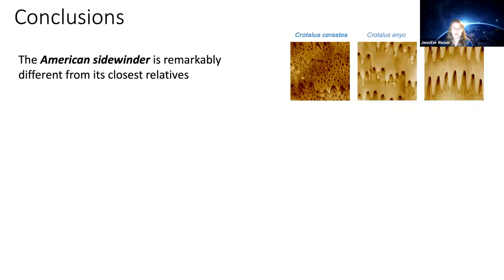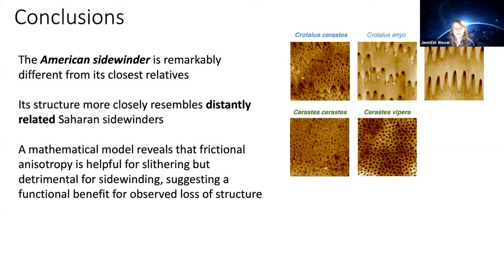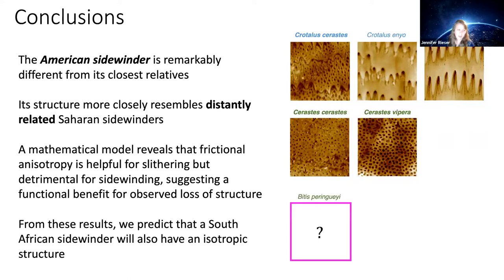To conclude: the American sidewinder has a remarkably different microscopic structure on its belly compared to its closest relatives, and it also moves differently — it sidewinds whereas its relatives do not. Its structure more closely resembles that of its distant relatives that inhabit the Saharan desert and also sidewind. A mathematical model hypothesizing a link between structural anisotropy and frictional anisotropy suggests this is beneficial for movement, and this makes predictions for other sidewinding specialists we were not able to obtain for the study.